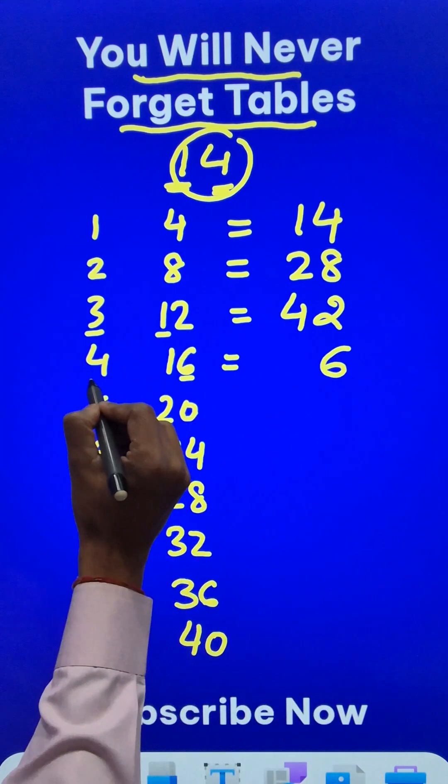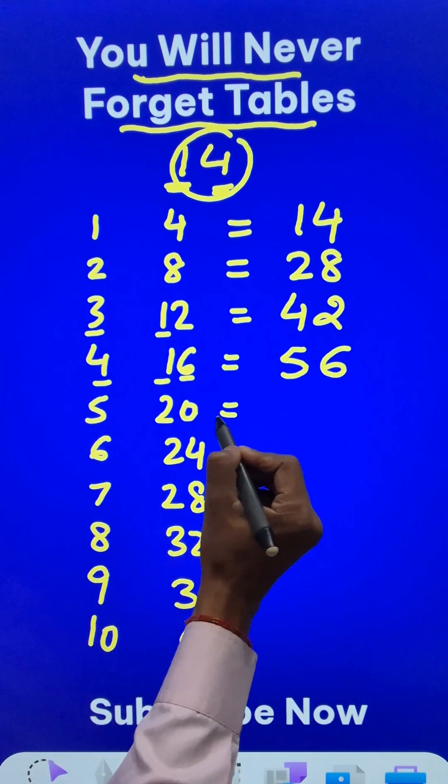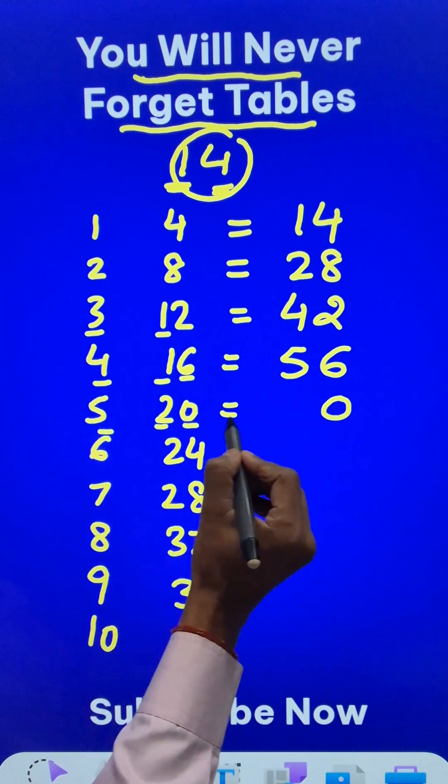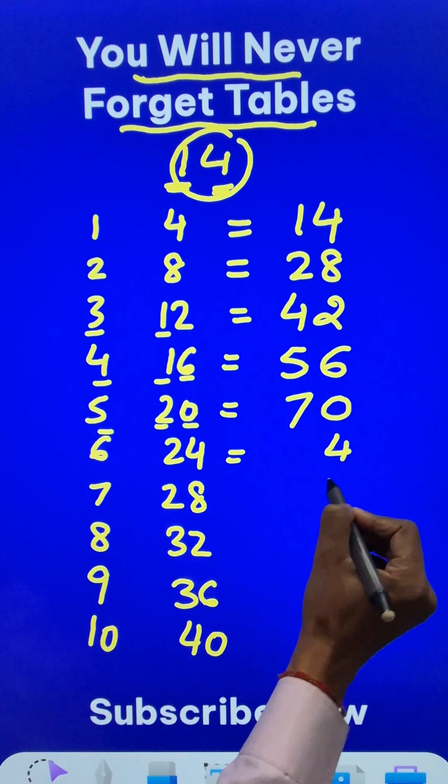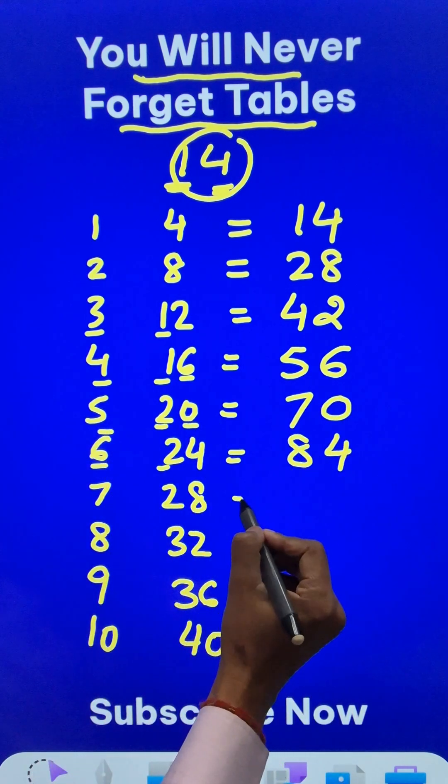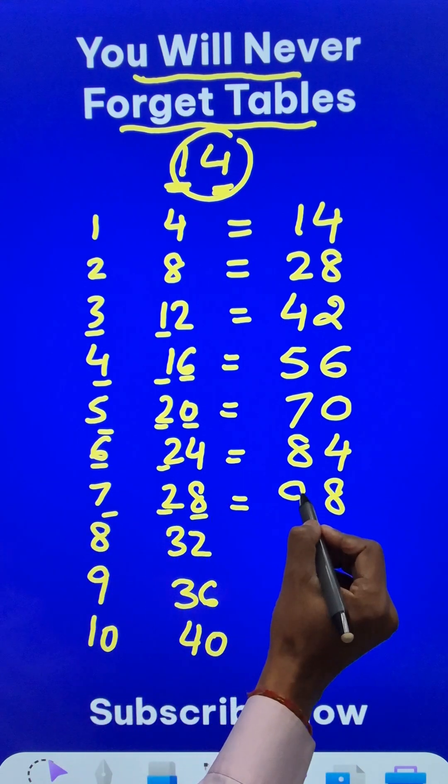Write the unit digit 6, 4 plus 1, 5. Write the unit digit 0, 5 plus 2, 7. Write the unit digit 4, 6 plus 2, 8. Write the unit digit 8, 7 plus 2, 9.